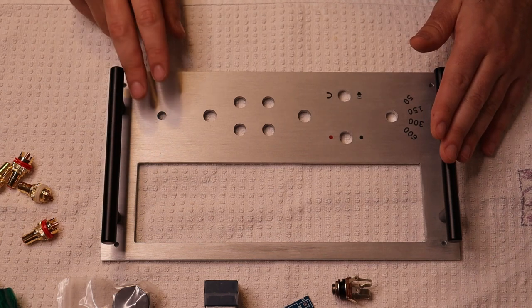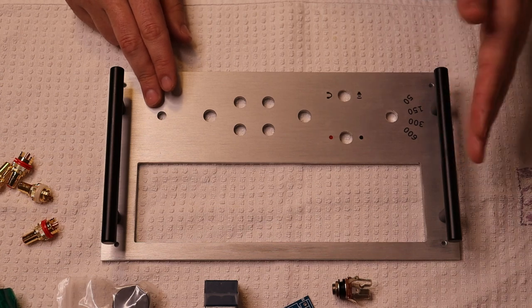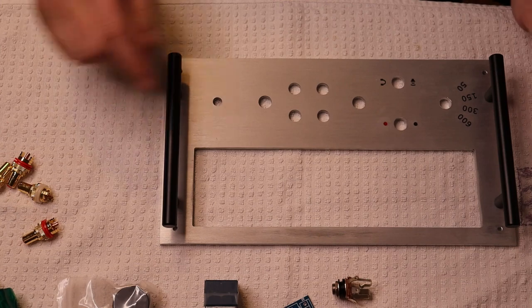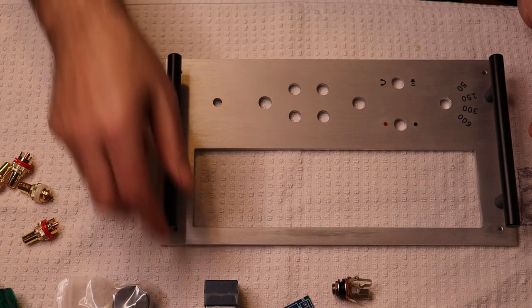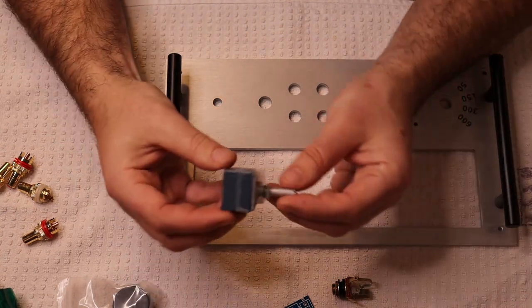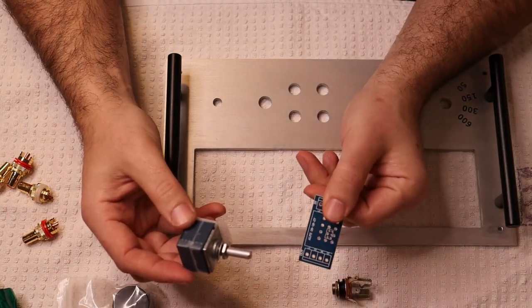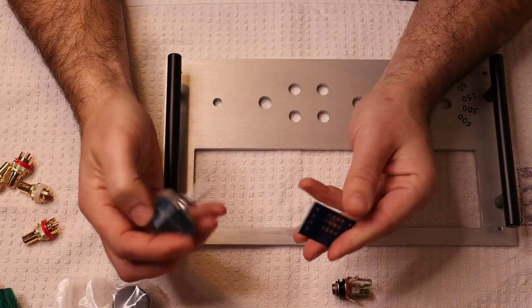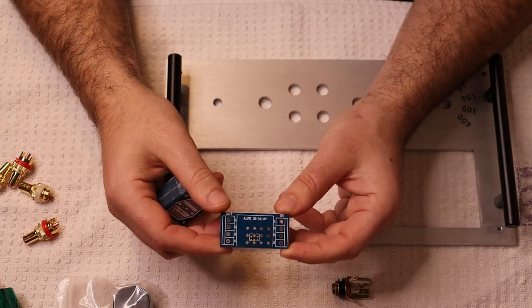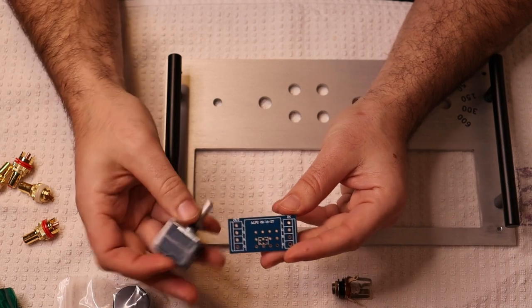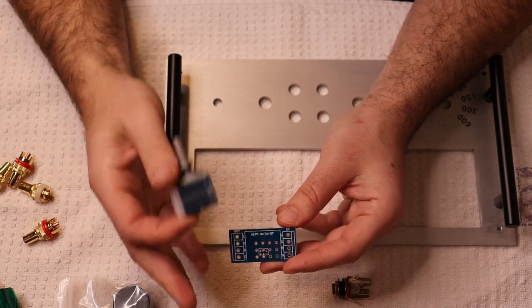What's next here? I guess we can work probably bottom to top. So we consider this sort of the back of the amp and this is the front. So right here is where we're going to put our Alps pot. That's this guy right here. Now, normally, whenever you're installing an Alps pot, you want to solder the PCB onto it first.